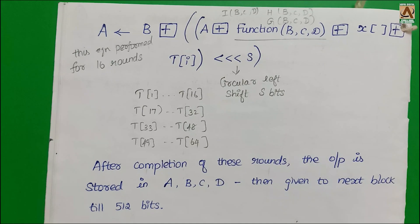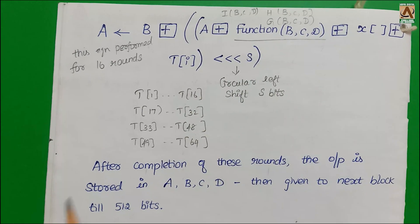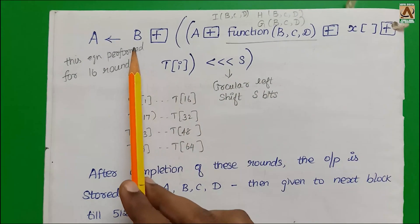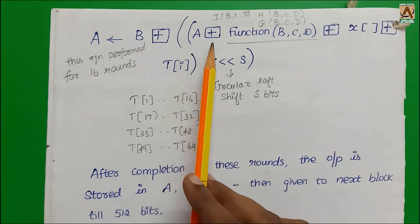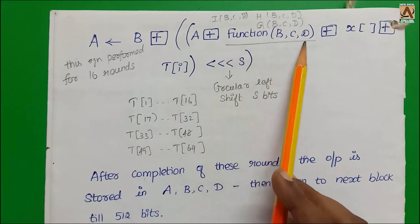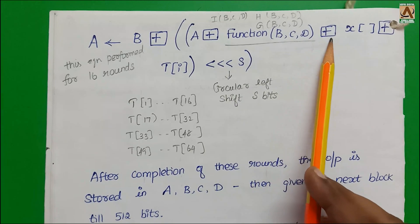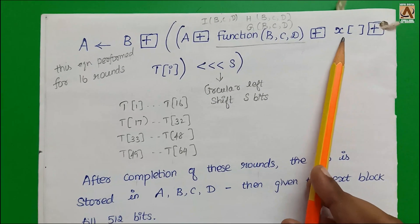The formula: A equals addition modulo of the A buffer, addition modulo of the function of B, C, D, addition modulo of the plaintext, addition modulo of the constant value, which undergoes circular left shift of S bits. This is the A buffer value we generate.